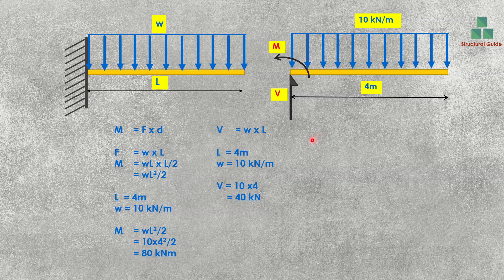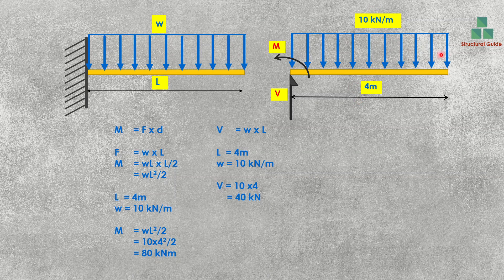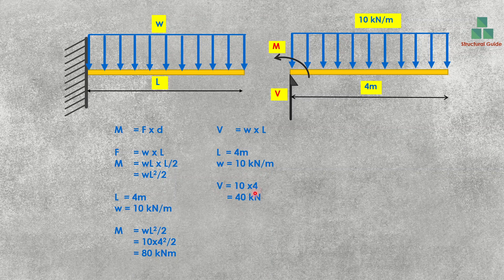Now let's calculate the shear force. As discussed previously, we consider the equilibrium of the section. From the top we have the UDL, and from the bottom we have the support reaction or shear force. The total force from the top is W × L. Substituting our values: 10 kN/m × 4 m = 40 kN. So with that, we have calculated the bending moment and shear force of the cantilever.